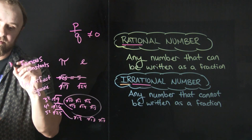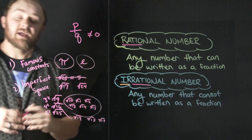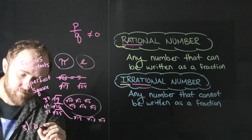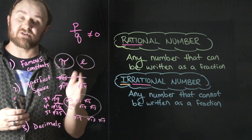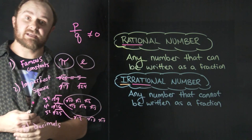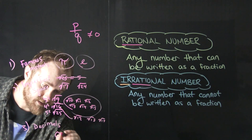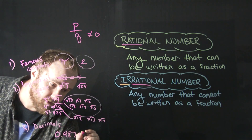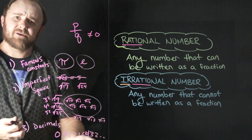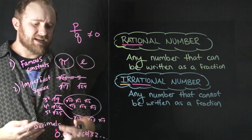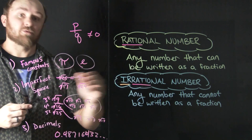So that's the second category. We have famous constants — pi and e are the most famous. We just spoke about imperfect squares. But we also have decimals that never terminate and never repeat. Terminating decimals just end, and repeating decimals have a repetitive pattern. But some decimals don't do that. For example, 0.487164... with no pattern — it's infinite, so it's not terminating, and it doesn't repeat. Decimals like that are also irrational. So those are really the three main categories of irrational numbers.